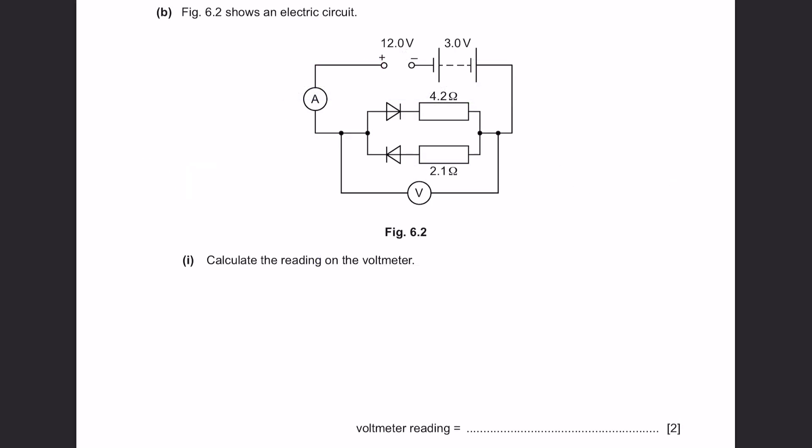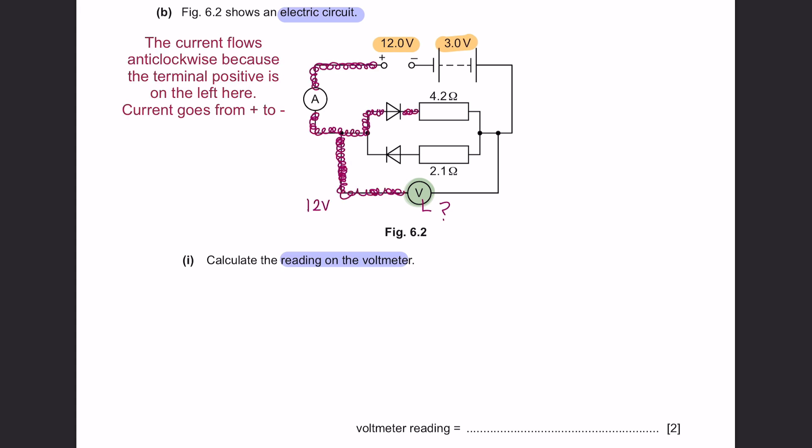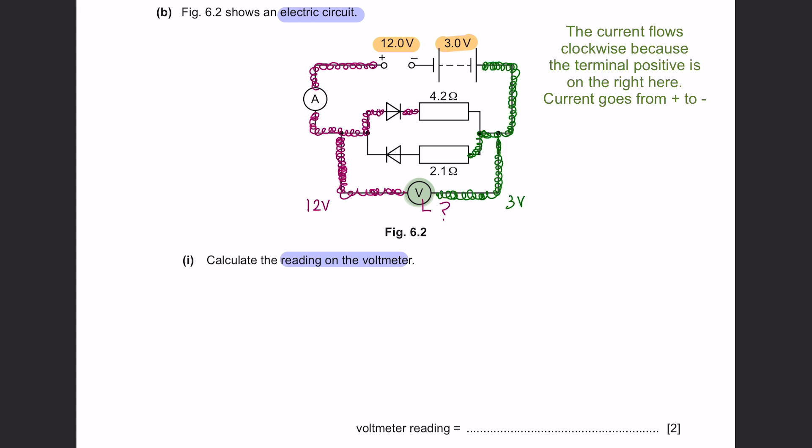Question B. Figure 6.2 shows an electric circuit. Part 1, calculate the reading on the voltmeter. We are given two different power sources. The first one is 12 voltage and the other is 3 voltage. For the anti-clockwise direction of current, it will be 12 voltage and for the clockwise direction, it will be 3 voltage.